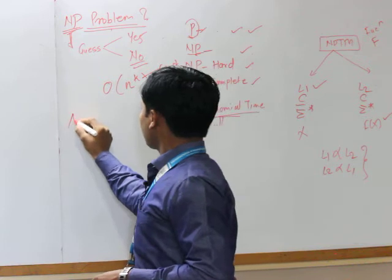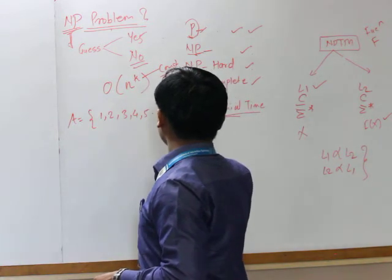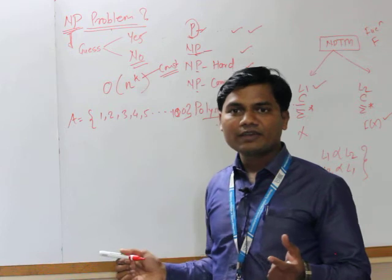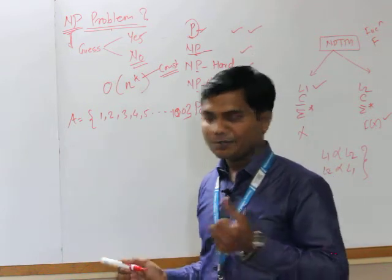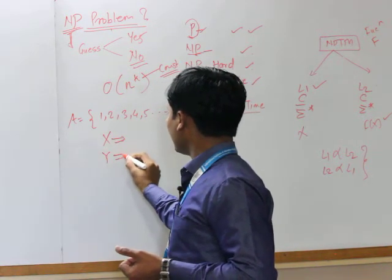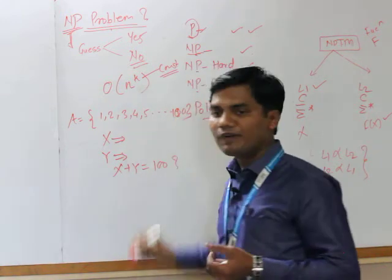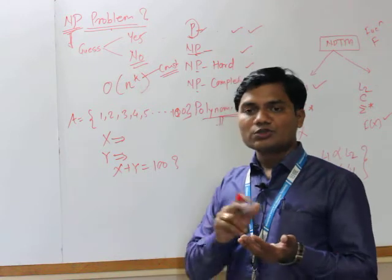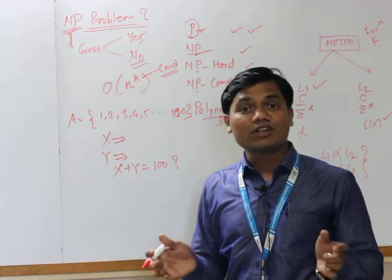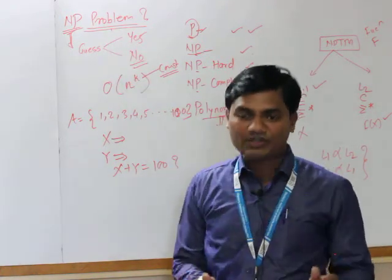Consider a simple example. Suppose I have one array consisting of 100 numbers, 1, 2, 3, 4, 5 up to 100. If I ask to find two numbers in the given array having addition equal to 100 — store first element in x and second element in y, and the target is x plus y equals 100 — here, the solution is possible or not possible, meaning prediction happens. That is why this problem is called a decision problem, and decision problems always come under NP problems. This is a non-deterministic polynomial type problem.